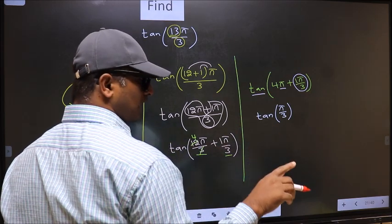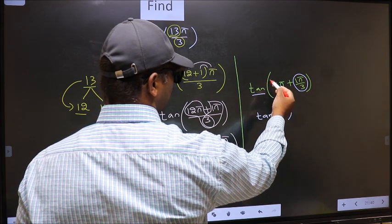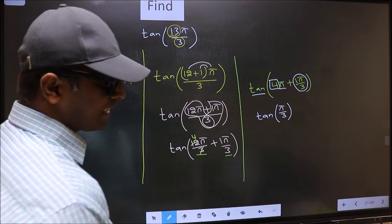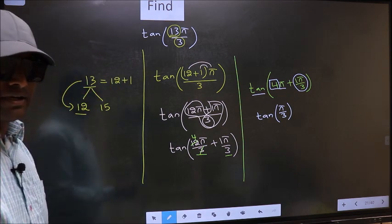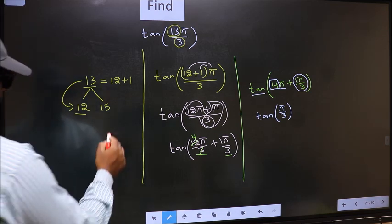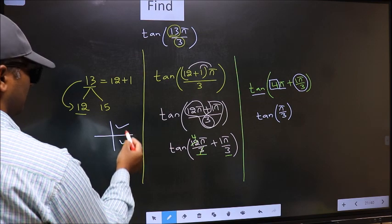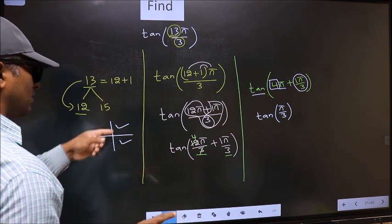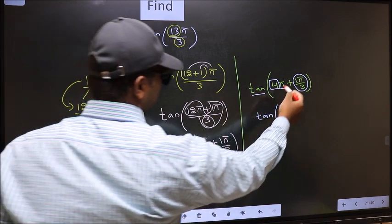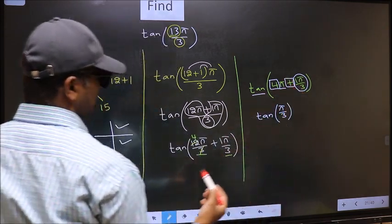To answer that, we should look at the number before π, which is 4, and 4 is even. All the even multiples of π lie either in the first or in the fourth quadrant. So now to select the quadrant, we should look at this symbol. Here we have plus, that means the angle lies in the first quadrant.